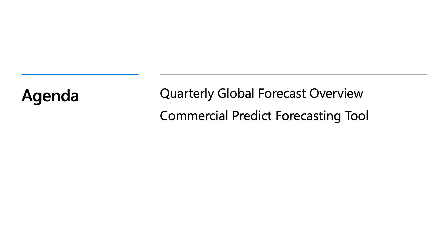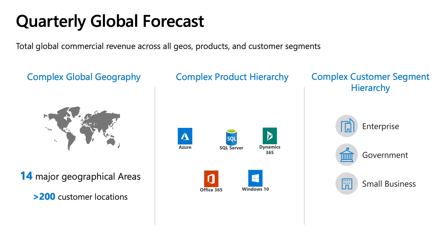We'll look at an overview of the quarterly global forecast and the Commercial Predict forecasting tool. The landscape of the quarterly global forecast has three main elements: a geography, a product, and a segment. There are multiple geographical areas around the world, several product hierarchies with multiple products beneath them, and several segmentation hierarchies — for example, enterprise. The goal is to consistently and repeatably produce a forecast on a quarterly basis.